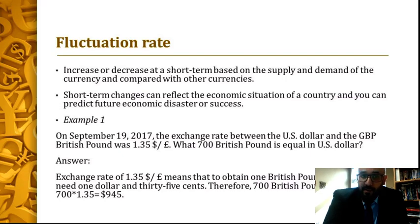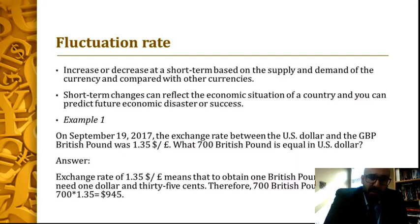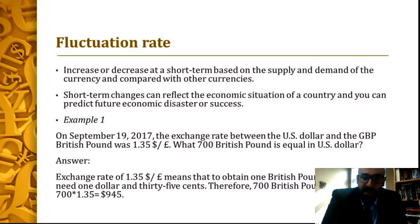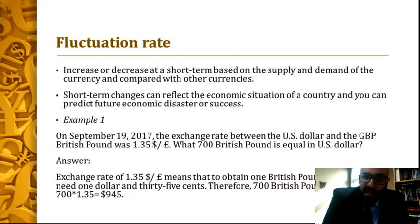Here's an example also listed in the textbook. On September 19, 2017, the exchange rate between the U.S. dollar and the British pound was 1.35 dollars per pound. The question is: what is 700 British pounds equal to in U.S. dollars? The exchange rate is 1.35, which means to obtain one British pound you need $1.35. Therefore, 700 British pounds equals 700 times 1.35, which equals $945.